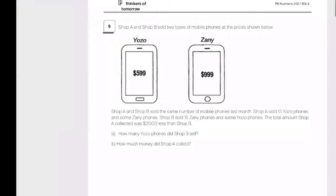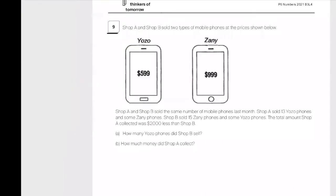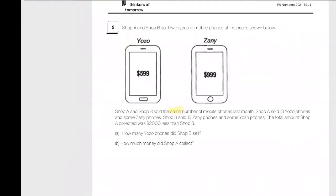Now the key words to this question is this. Firstly, they collected the same number. Total amount Shop A collected was $2,000 less than Shop B. At the same time, which is more expensive? Zeny is more expensive.